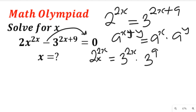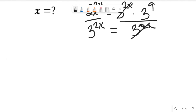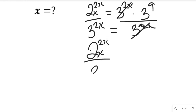Having gotten this, the next thing we need to do is divide both sides by 3 to the power of 2x. Dividing both sides by 3 to the power of 2x will clear 3 to the power of 2x on the right, and we will be left with 3 to the power of 9 on the right hand side. So this gives us 2 to the power of 2x divided by 3 to the power of 2x, equal to 3 to the power of 9.